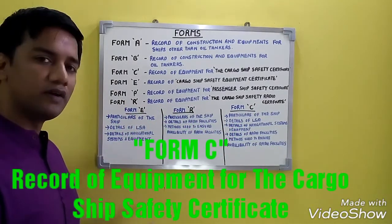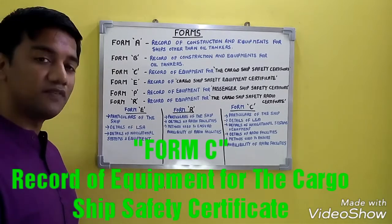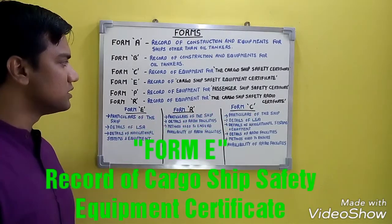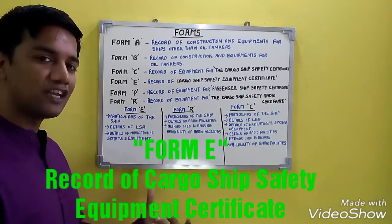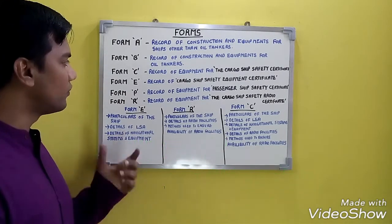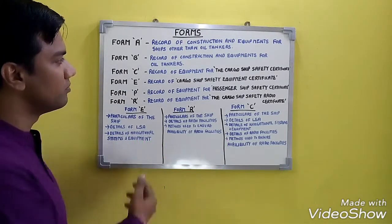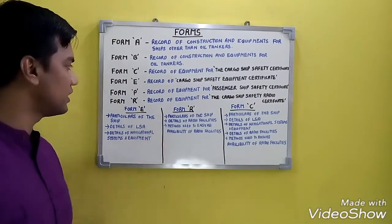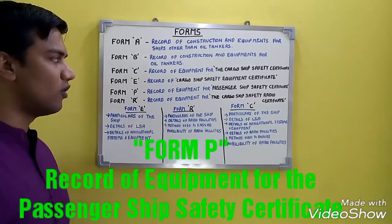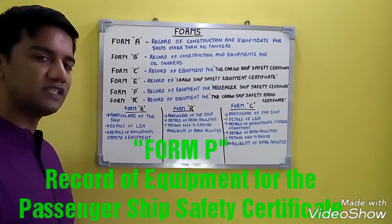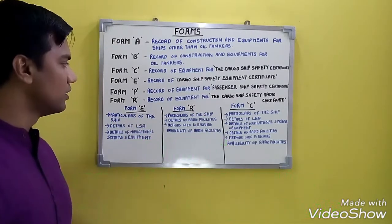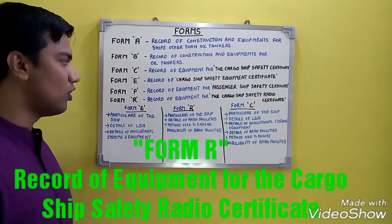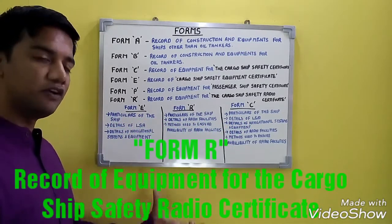Coming to Form C, Form C represents the Record of Equipment for the Cargo Ship Safety Certificate. Form E represents the Record of Cargo Ship Safety Equipment Certificate — E for Equipment, remember C is for Cargo Ship Safety Certificate, E is for Safety Equipment. Form P is the Record of Equipment for the Passenger Ship Safety Certificate — P for Passenger.